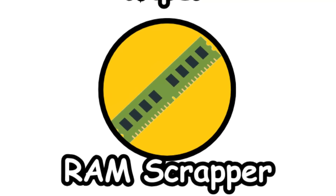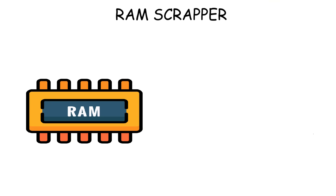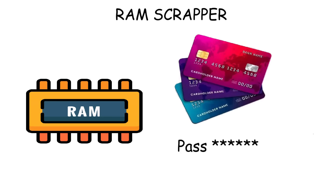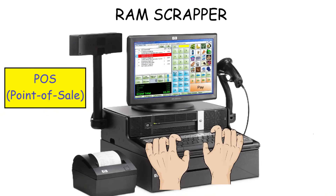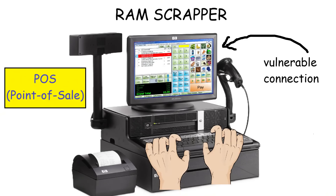RAM Scraper malware targets the computer's RAM to steal sensitive information like credit card numbers or login credentials while they are temporarily stored in memory during transactions. RAM Scrapers are commonly found in point-of-sale systems where they can capture payment information, usually due to a vulnerable connection.